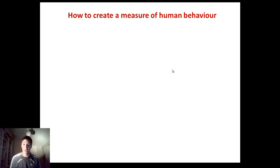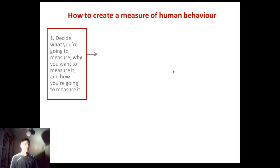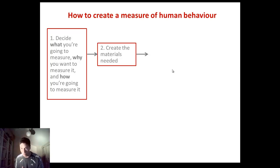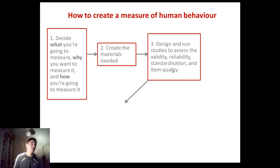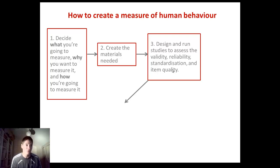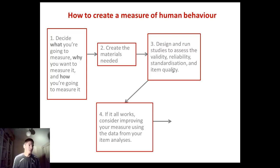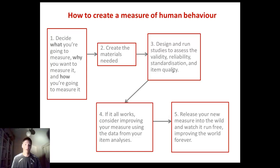Here are the steps for creating a measure of human behaviour. Step one: decide what to measure, why, and how. Step two: create the materials. Step three: design and run studies to assess validity, reliability, standardization, and item quality — all things mapped onto your assignments. If those studies provide decent evidence, step four is improving the measure using item quality statistics, before finally releasing the measure.